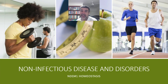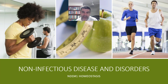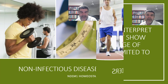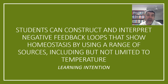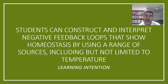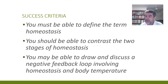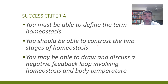Hi students, welcome to HSC Biology. This is Module 8 on Non-Infectious Diseases and Disorders. We're going to start off by looking at homeostasis. Your learning goal for this particular video is to be able to construct and interpret negative feedback loops that show homeostasis by using a range of sources, including temperature. We want you to be able to define the term homeostasis, to contrast the two important stages of homeostasis, and then to draw and discuss a negative feedback loop that involves the maintenance of homeostasis.